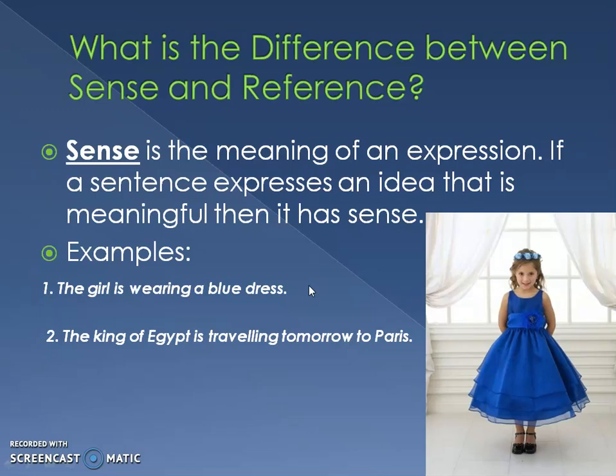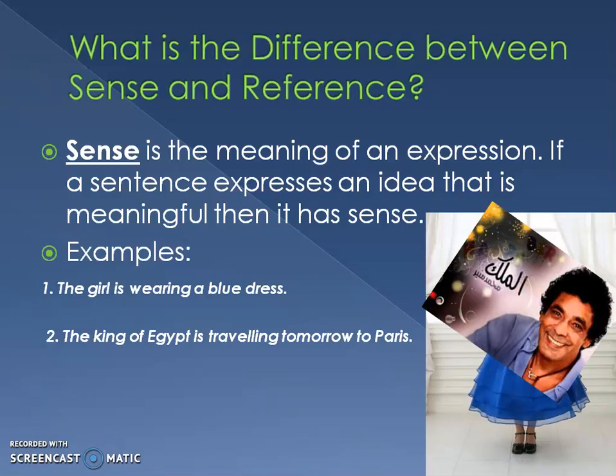Now the other sentence: 'The king of Egypt is traveling tomorrow to Paris.' The sentence also makes sense — it expresses an idea telling me the king of Egypt is traveling tomorrow to Paris. It's true that we don't have a king of Egypt now, but the sentence still expresses a meaningful idea.